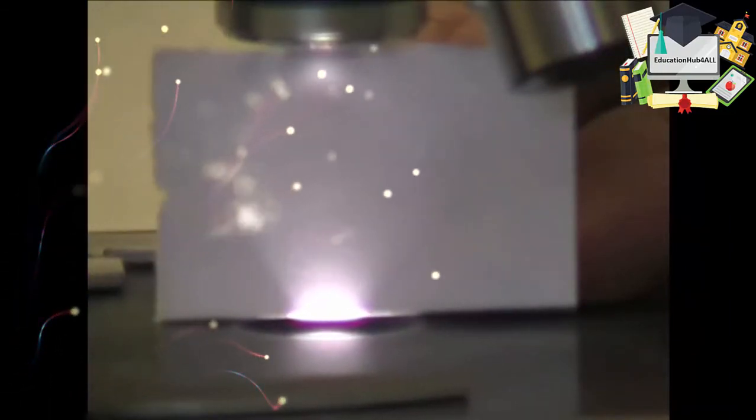With the lever at the front here, you can adjust the size of this cone of light. Each time you change the objective lens, it's important to make this adjustment so all of that light is going into the lens.